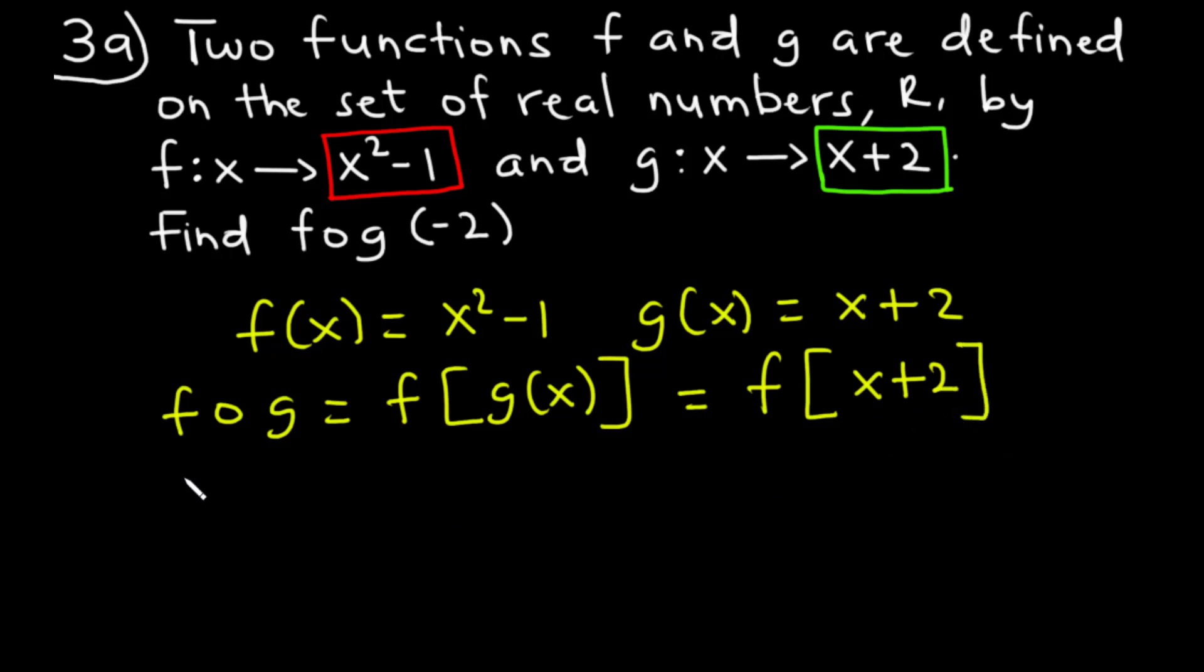For the next step, since f(x) is the bigger function and g(x) is inside, we write f(x) = x² - 1 as ( )² - 1. Wherever we see x in f(x), we replace it with x + 2. So we have (x + 2)² - 1.